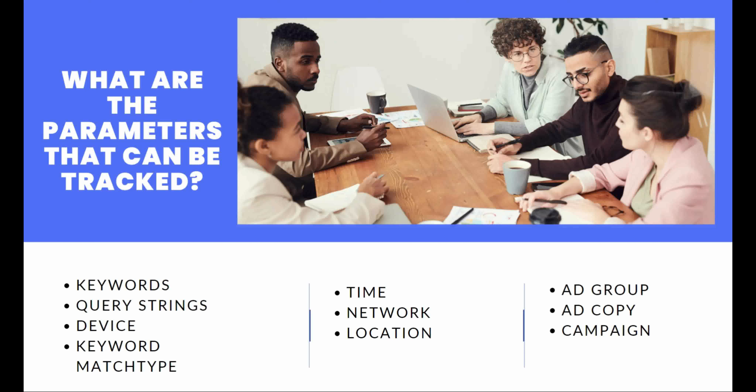Third is device: which device is giving you maximum sales — phone, tablet, or desktop. Fourth is keyword match type: whether sales are coming from exact match, broad match, or phrase match. This helps scale down your campaign further. Fifth is time: what time you are getting sales — night, midnight, morning, afternoon. Sixth is network: whether from Google partners, YouTube, Bing partners, or Yahoo AOL.